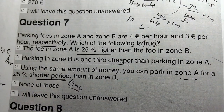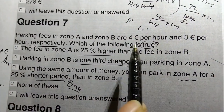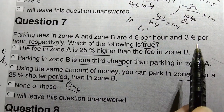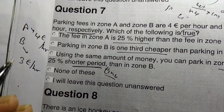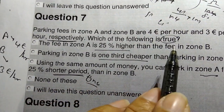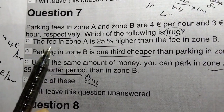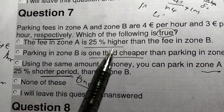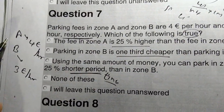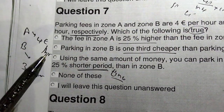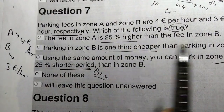Question number seven: parking fees in zone A and zone B are four euros per hour and three euros per hour respectively. Which of the following statements is true? First statement: the fee in zone A is 25% higher than the fee in zone B. Zone A is four euros, zone B is three euros — the difference is one euro. You compare the difference with zone B.